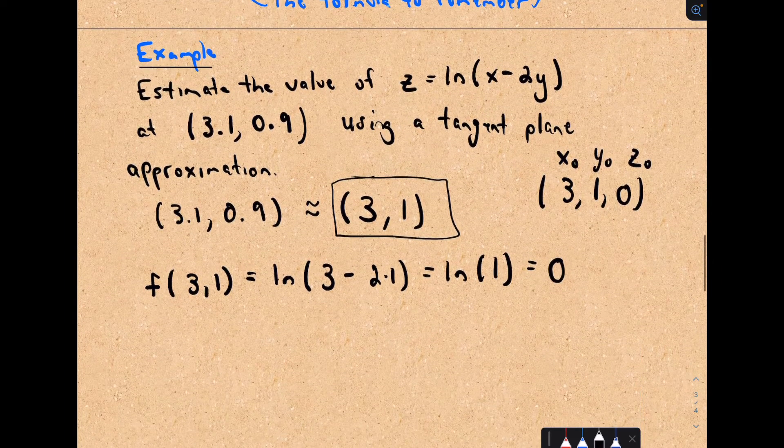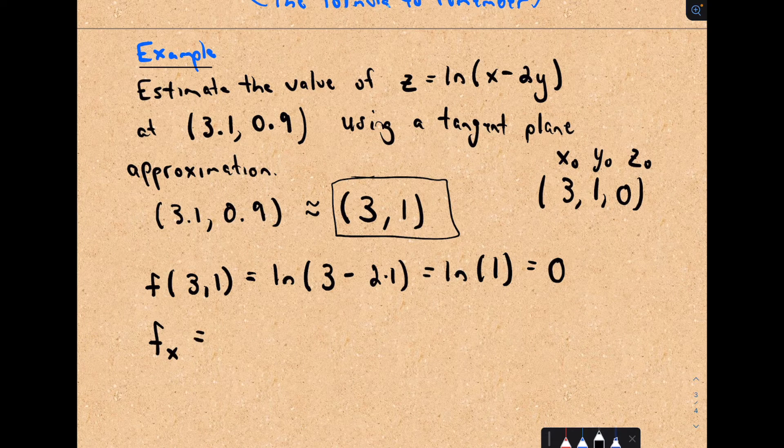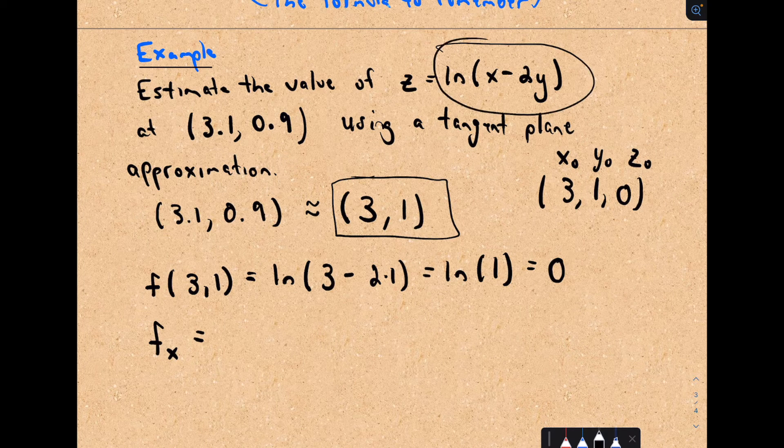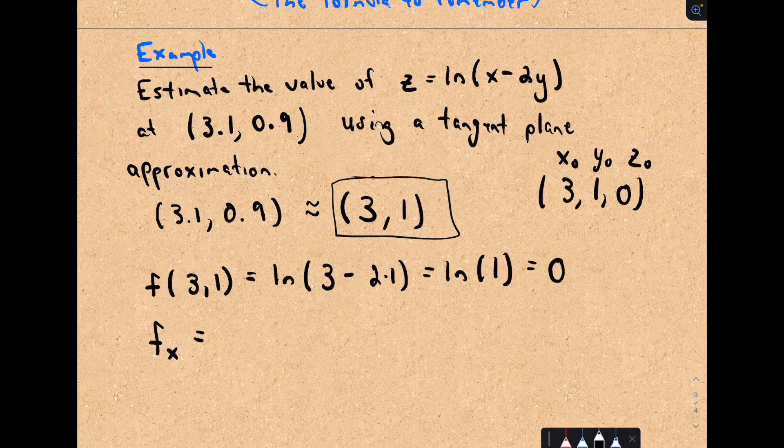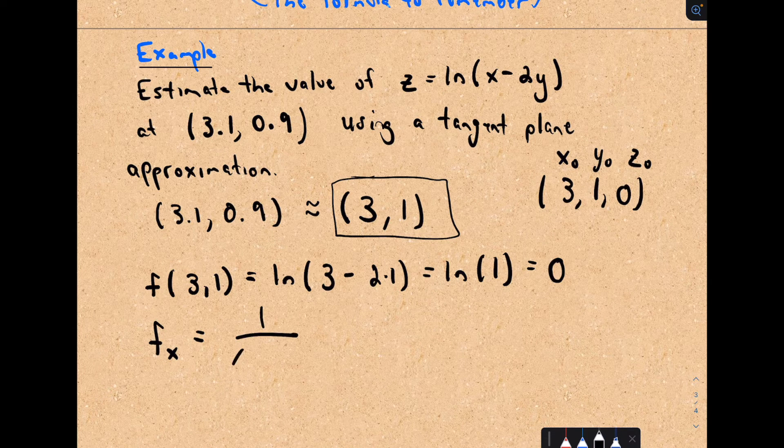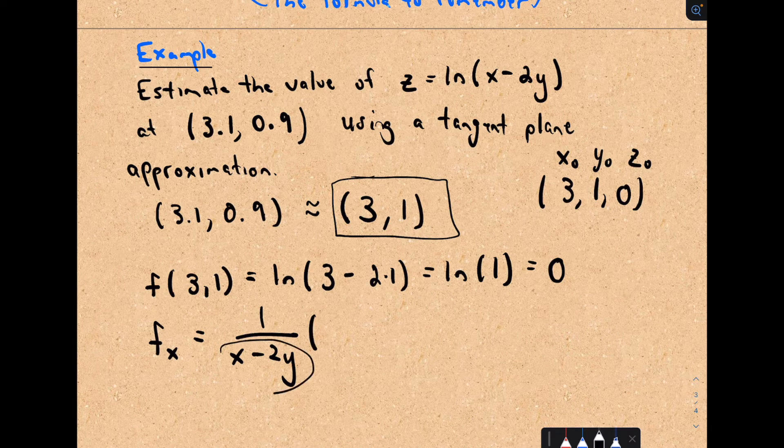So we've got to calculate the partials. So the partial derivative with respect to x. Now I'm treating y like a constant. So the derivative of the natural logarithm of x minus 2y, I would get 1 over x minus 2y.